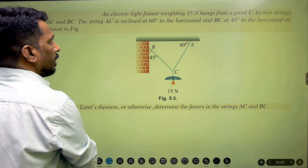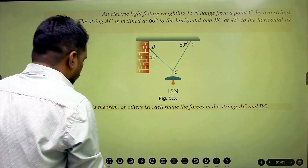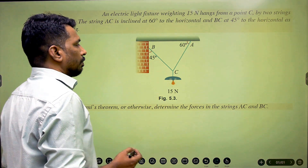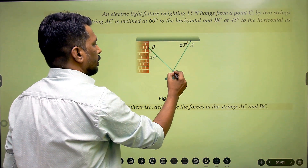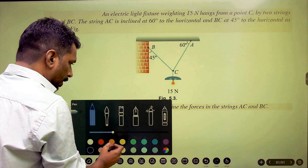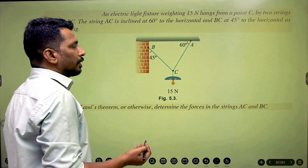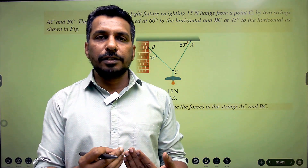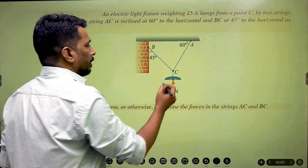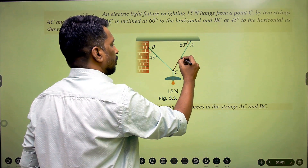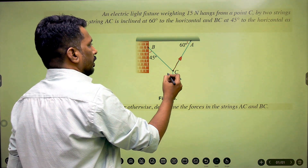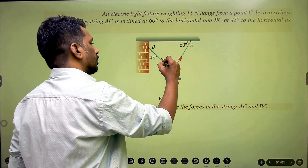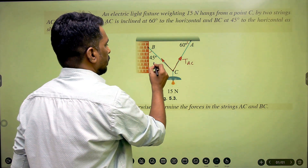Let me show the free body diagram clearly. This is the first step to solve an equilibrium problem. For Lamy's theorem, we need a point through which three forces pass. There are three points: A, B, and C. Cables or strings carry tension, and tension always acts away from the point. Considering point C, the force in cable AC acts away from it, and the force in cable BC also acts away from it. So this is tension TAC and this is tension TBC.